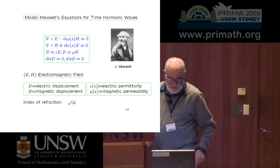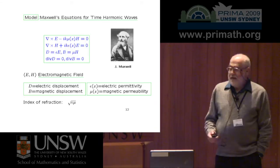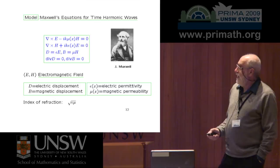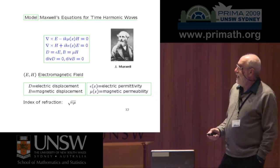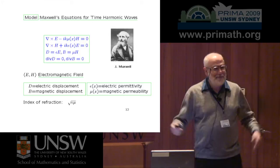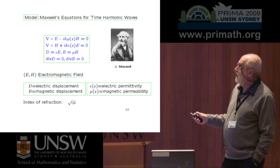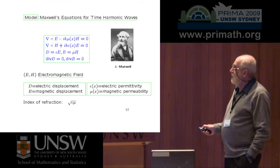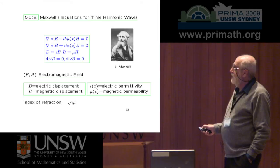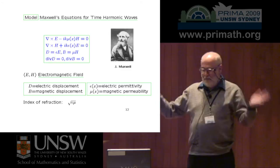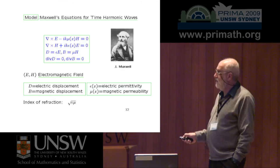Here is a more precise description. These are Maxwell's equations — one of the great triumphs of 19th century physics — which gave us light, radio, television, and everything else, summarizing the propagation of electromagnetic waves. These are time-harmonic waves; K is the frequency of the wave. E and H are the electromagnetic field. D is the electromagnetic displacement, B is the magnetic displacement. Epsilon is the electric permittivity and mu is the magnetic permeability, which determines the electromagnetic properties of materials. We are going to build a material with very particular electromagnetic properties. The index of refraction is the square root of epsilon times mu.